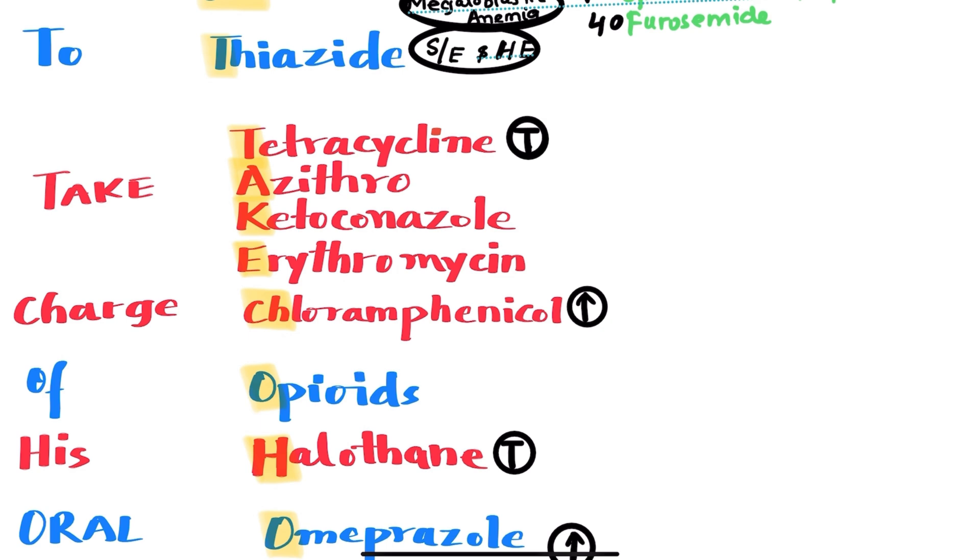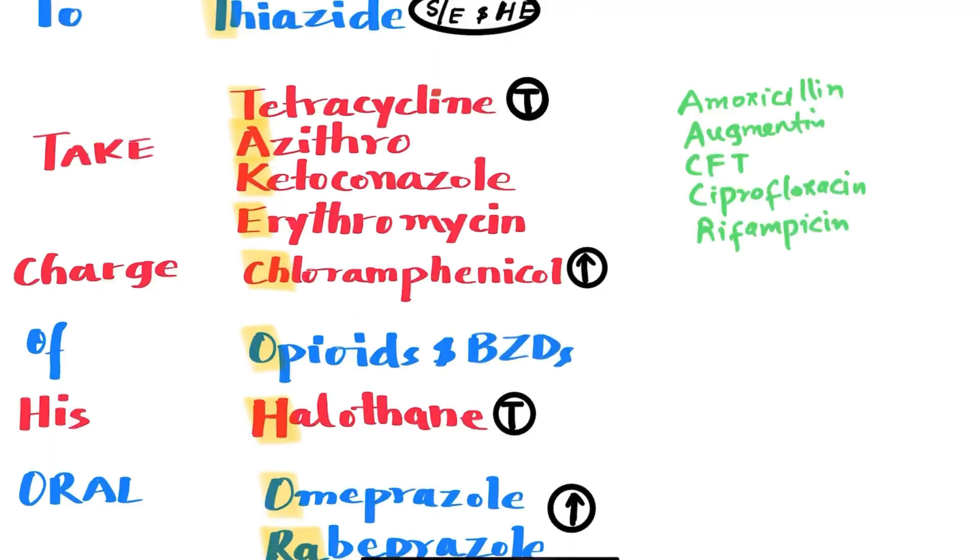And CHARGE is for chloramphenicol. The chloramphenicol is metabolized by the liver, so its level rises with liver failure. A few of the alternative antibiotics that can be used are amoxicillin, Augmentin, ceftriaxone, ciprofloxacin, and rifampicin.